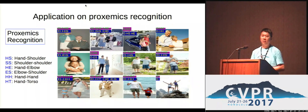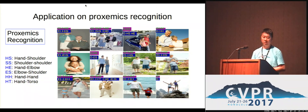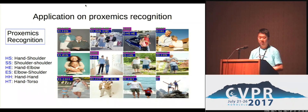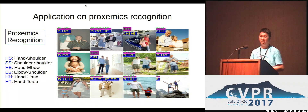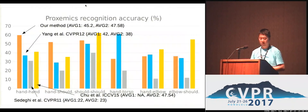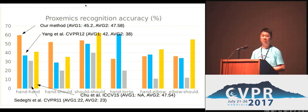We also applied our method to proxemics recognition — recognizing how people are interacting with each other. The interaction classes include things like hand-shoulder touching, shoulder-to-shoulder touching, and so on. Our results are quite close to the ground truth, and our method works well for these applications because we have the ability to detangle people and find their body parts, enabling many downstream applications. Quantitatively, our method gives the best average recognition accuracy among several competing state-of-the-art methods.